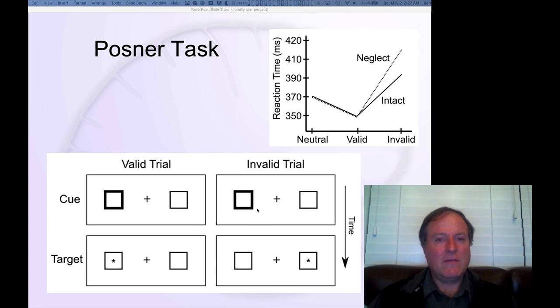And interestingly on the invalidly cued trials you get the cue here and you do not know at this point that this is going to be an invalidly cued trial. So presumably you draw your attention over to that side of space. But lo and behold the target shows up on the wrong side of space, so to speak, on the opposite side of space.